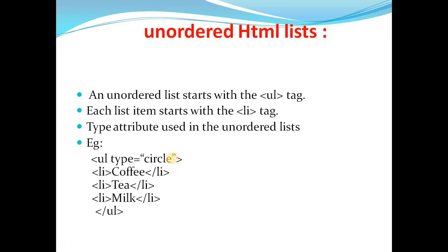First comes the unordered list. The unordered list starts with the UL tag. Each list item starts with the LI tag. The type attribute is used in the unordered list — type is the attribute we use to define the style of the list bullets.